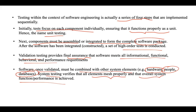These are the four steps implemented sequentially: first unit testing, followed by integration testing, then validation testing, and finally system testing, in order to ensure that overall system performance is achieved.